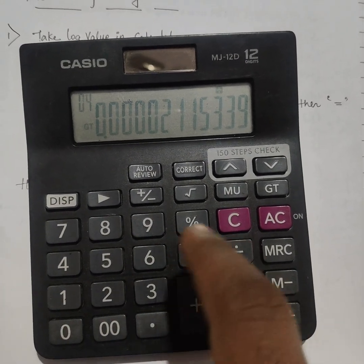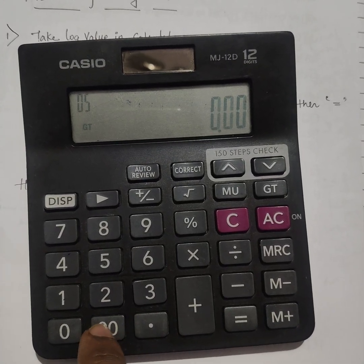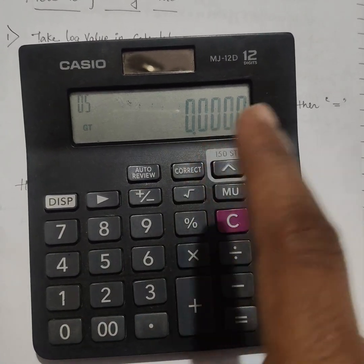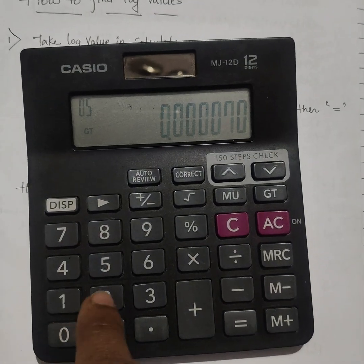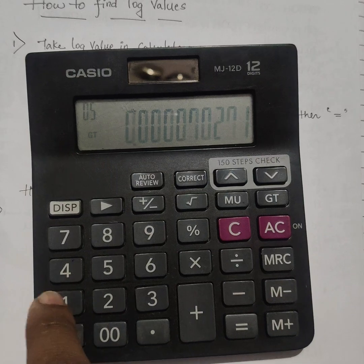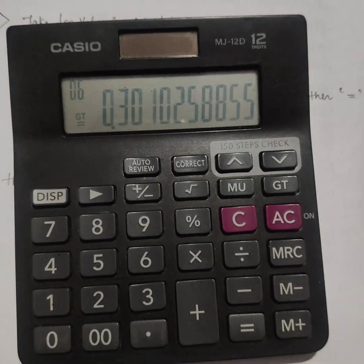This number you should divide by 0.00040271. We will get the answer 0.3010.